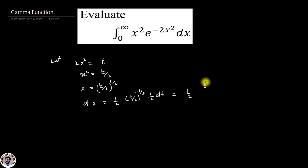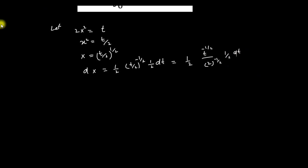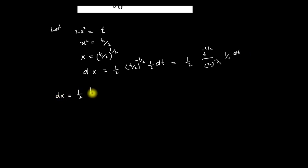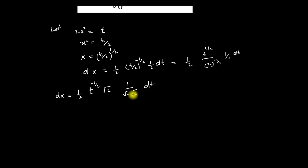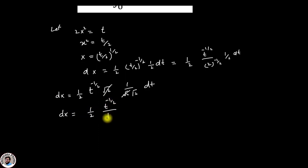This can be written as half into t to the power minus half, divided by 2 to the power minus half, and half dt. This can further be written as dx equals half t to the power minus half times the square root of 2, with 1 over root 2 and root 2. These two cancel each other, and we get dx equal to half t to the power minus half divided by root 2, times dt.